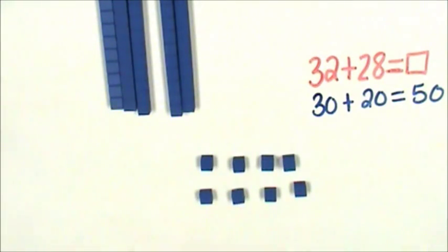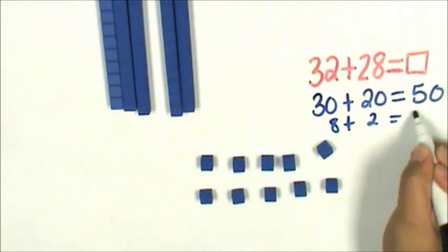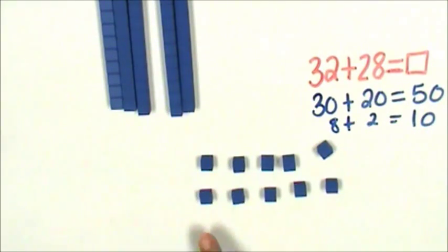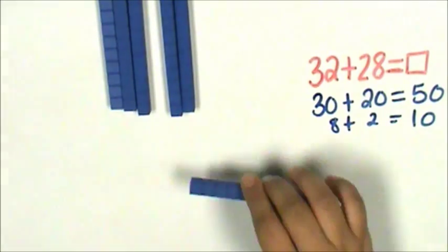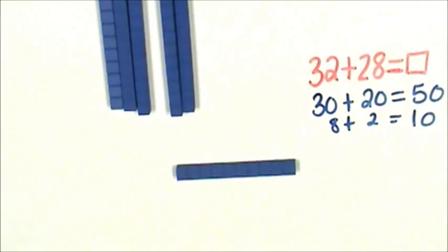Two ones and eight ones is ten ones. Eight plus two is ten. Ten ones is one ten.